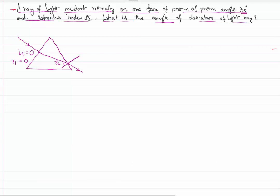So how much has it got deviated when compared with the initial light ray? What's the deviation? That's what our question is. So this becomes automatically my i2 at the second phase. This is the angle of the prism which is given as 30 degrees.